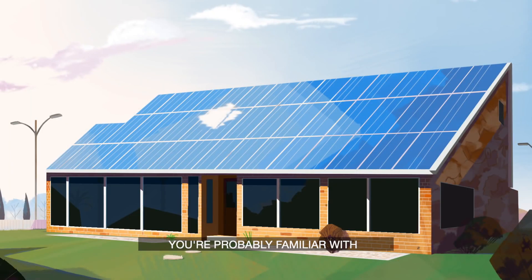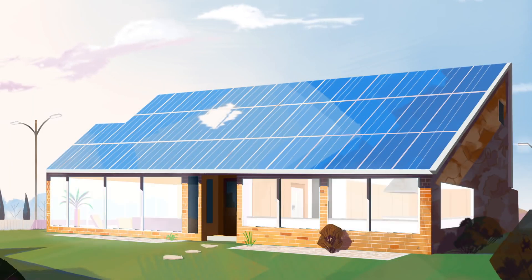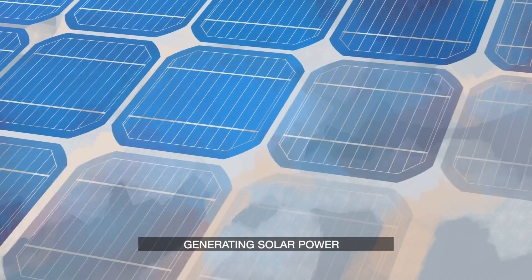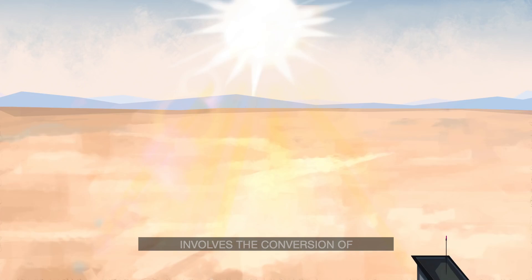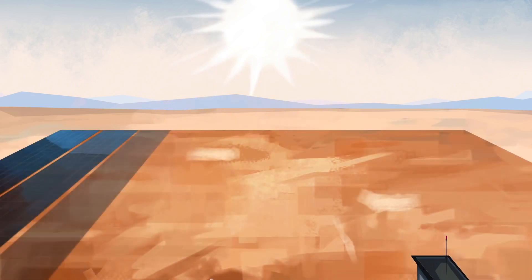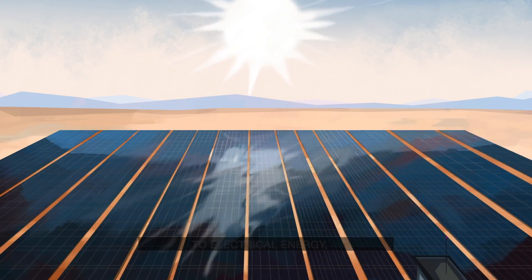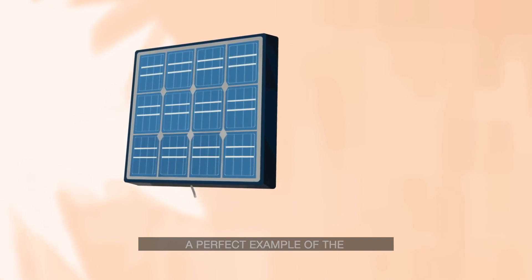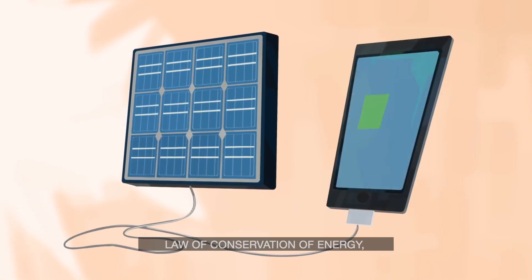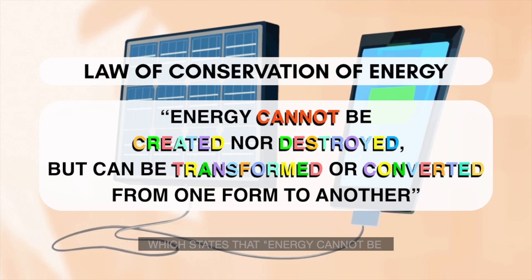You're probably familiar with solar power. Simply explained, generating solar power involves a conversion of light energy from the sun to electrical energy — a perfect example of the law of conservation of energy, which states that energy cannot be created nor destroyed; it can be transformed or converted from one form to another.